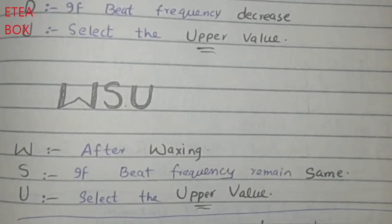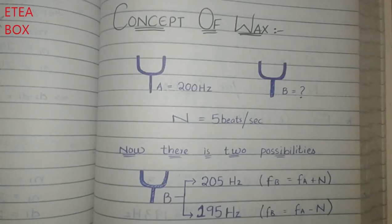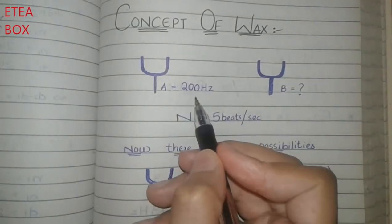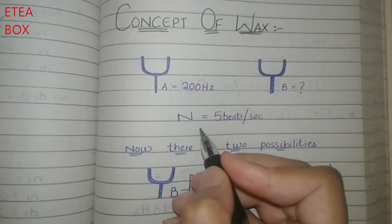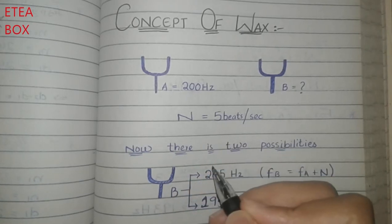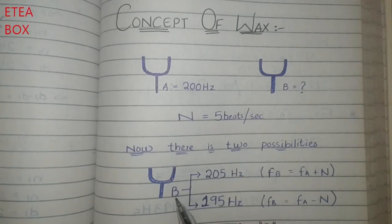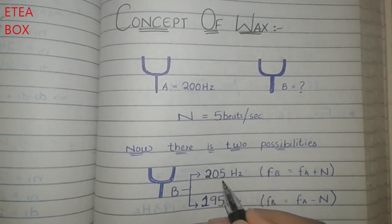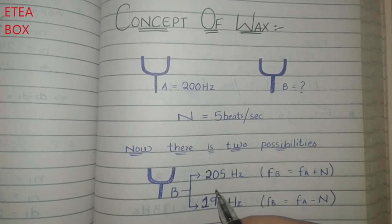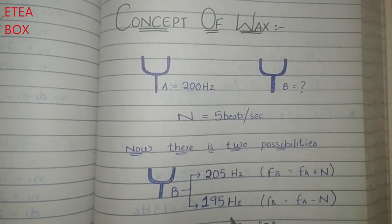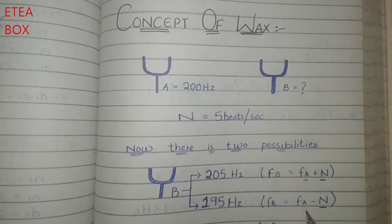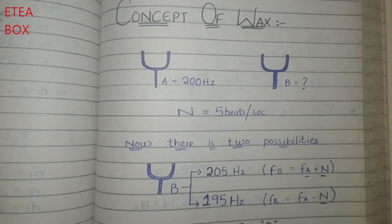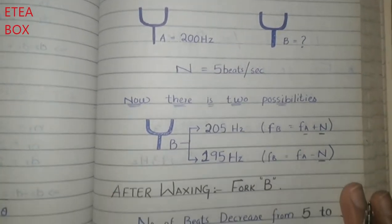Now let's take an example. Here are two tuning forks: A is equal to 200 Hz and the frequency of B is unknown. The number of beats is 5 beats per second. There are two possibilities: the frequency of tuning fork B is either 205 Hz or 195 Hz — you either add or subtract the number of beats from frequency A.